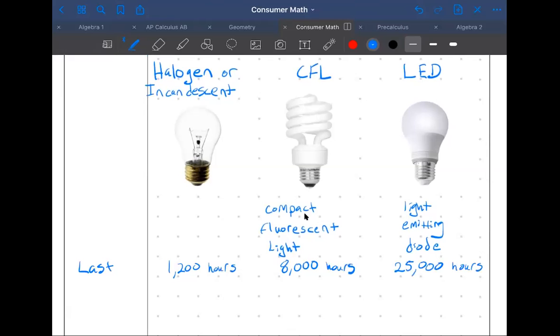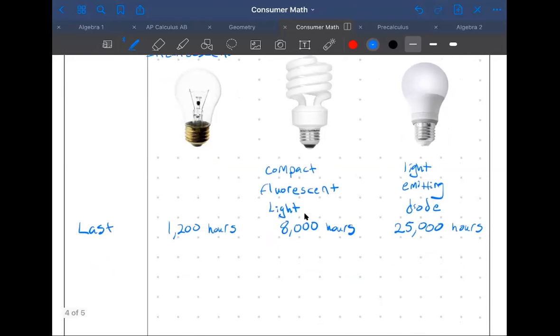CFLs are typically 25 to 35 percent more efficient than incandescents. LEDs are 75 percent more efficient. Tonight we will have homework, but I think most people can finish in class, I'm hoping.